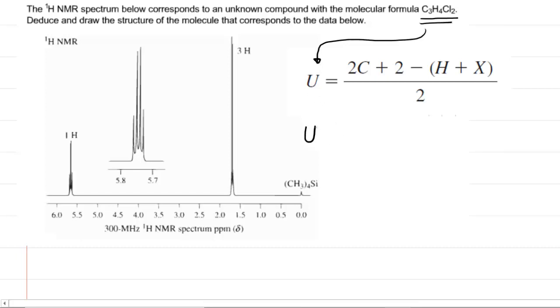So we'll do that first and we simply take the number of carbons, which is 3, and we multiply that by 2. We then add 2 and then subtract the total number of hydrogens and halogens. We have 4 hydrogens plus 2 halogens. Remember that chlorine is one of the halogens. And we divide this by 2.